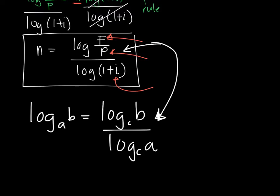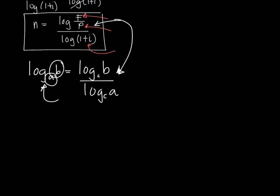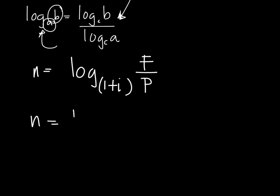So, we can put it back to a single log by having the denominator as the base and the numerator as the value B. So, that means N in another form is log with base 1 plus I of F over P. And you can still extend this into N equals log base 1 plus I of F minus log base 1 plus I of P.